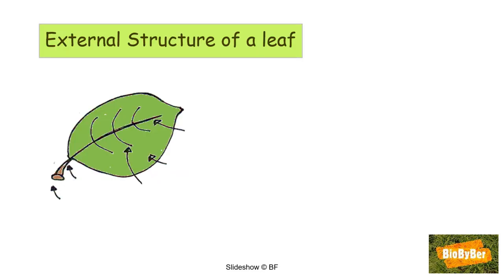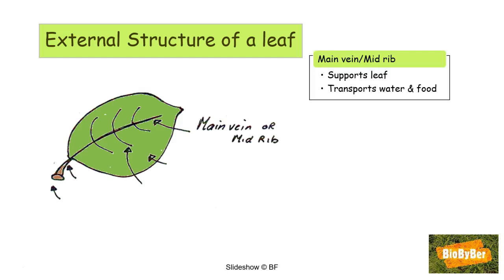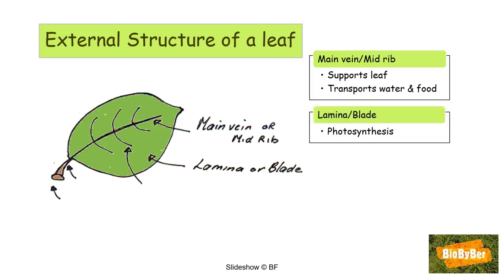Looking at the external structure of a leaf, the main part is the main vein or midrib, which is the biggest vein. Its function is to support the leaf and it also contains xylem and phloem — vascular tissue — so it transports water and food. The second part is the lamina or blade, a flat thin surface whose function is to carry out photosynthesis and make food for the plant.